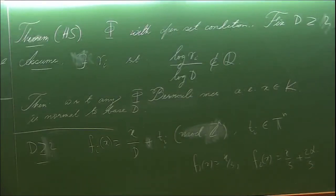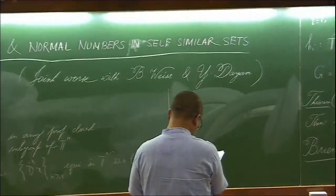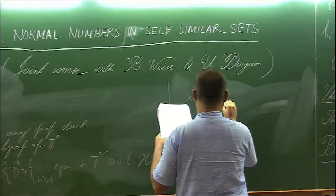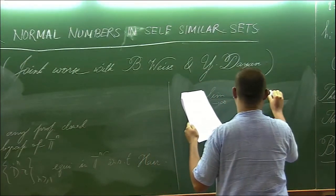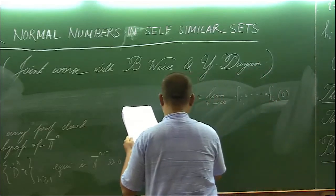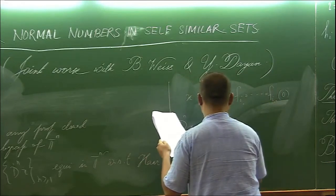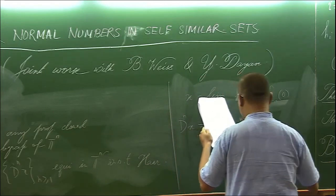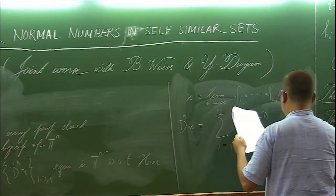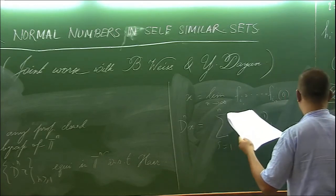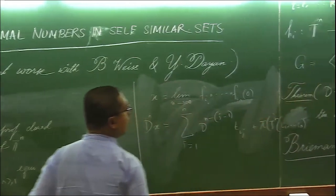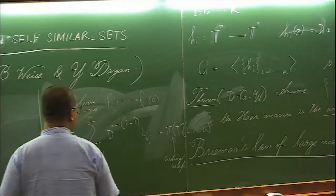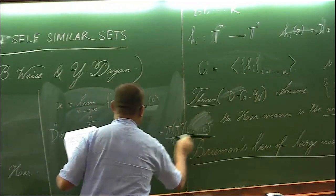In this case, suppose x admits this form Fi1 composed with Fi2 up to Fin applied to the coding sequence. Then one can directly calculate and see this is nothing but d to the minus n times Ti1 plus d to the minus n minus 1 times Ti2 plus up to d to the minus 1 times Tin plus pi of the tail of the sequence, where pi is in that case the coding map.